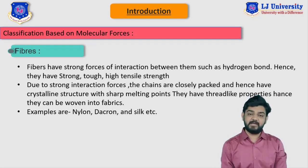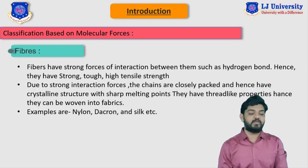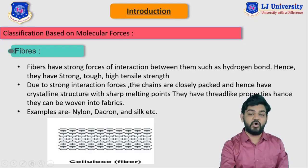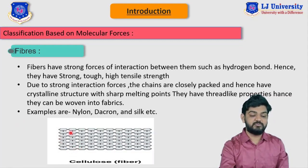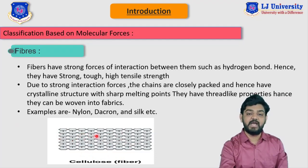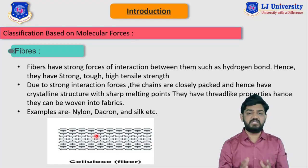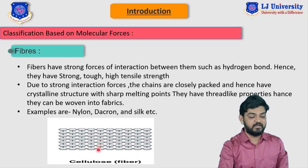Because the chains are closely packed, fibers have a crystalline structure and mainly thread-like properties. Fibers have a very high melting point since they are connected in a close manner. Examples are nylon and silk. As you can see in the image, the structure is closely packed and connected by hydrogen bonds, making it not easy to break. This is an example of cellulose fiber.